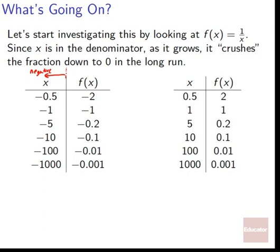The same thing happens on the positive side. Starting from 0 and going right: at 0.5 we're at 2, at 1 we're at 1, at 5 we're at 0.2, and at 1,000 we're at 0.001. As we get really, really large numbers, we'll get crushed smaller and smaller and smaller.